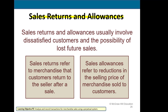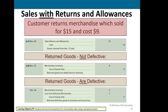With sales returns and allowances, we're looking at returns of merchandise we had previously sold, or granting an allowance which is a reduction of the selling price because the merchandise is defective or not exactly what the customer ordered. A customer returns merchandise that sold for $15 and cost us $9. We debit sales returns and allowances and credit cash. If the returned goods are not defective — meaning we can resell them — we record a second journal entry to put it back into merchandise inventory and remove it from cost of goods sold.